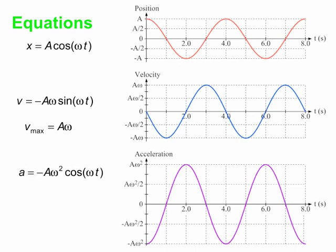The acceleration equation is a equals minus A omega squared cosine omega t. The maximum acceleration is A omega squared. So to summarize: maximum x is A, maximum v is A omega, and maximum acceleration is A omega squared. Omega is what we call the angular frequency.